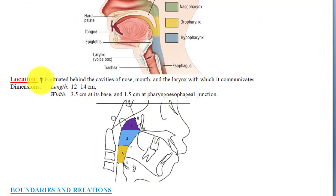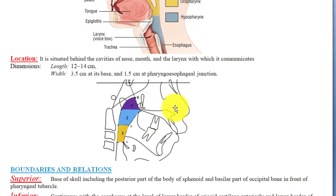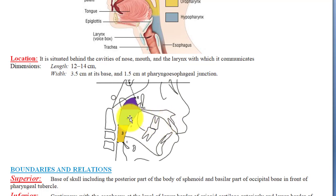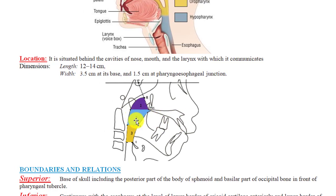The location of the pharynx: it is situated behind the cavities of the nose, mouth, and larynx. Behind the nasal cavity is the nasopharynx; behind the oral cavity is the oropharynx; and behind the larynx is the laryngopharynx. It communicates with all three of these cavities.